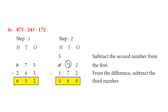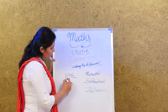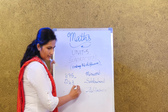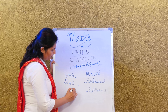We will also take a look at the subtraction on page number 87 — it is for you to practice. Let us look at one more sum in page number 87, roman numeral 4. The sum is 875 minus 243 and then minus 172.